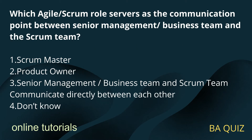Question number 2: Which agile scrum role serves as the communication point between the senior management business team and the scrum team? Option 1: Scrum master. Option 2: Product owner. Option 3: Senior management business team and scrum team communicate directly between each other. Option 4: Don't know.